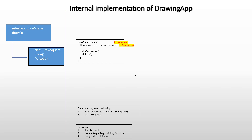Hello and welcome everyone, this is Sandeep. In the earlier video we saw the internal implementation of our drawing app — we saw what a dependent is and what a dependency is, we looked at the code, and we observed that there were some problems with this code. In this video we are going to rewrite our code so that we don't have these problems.